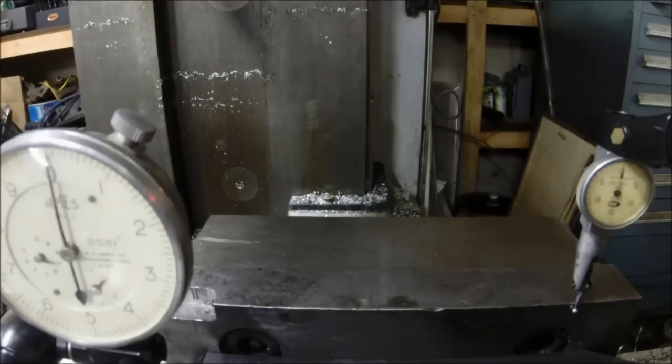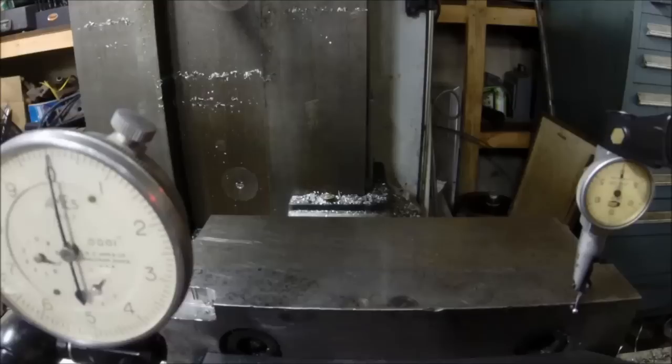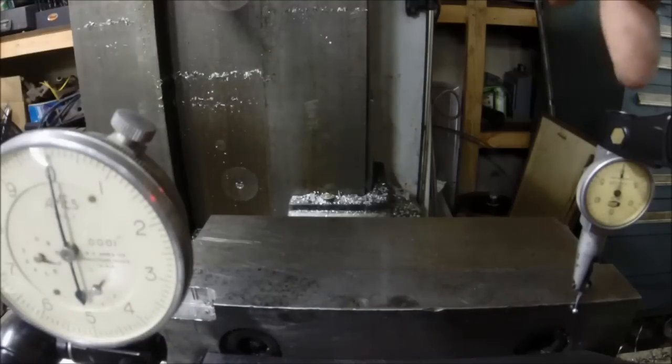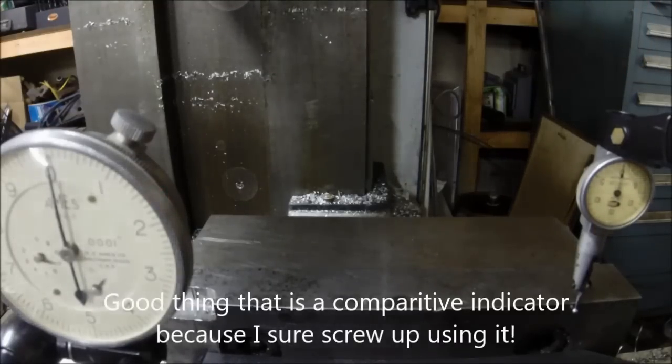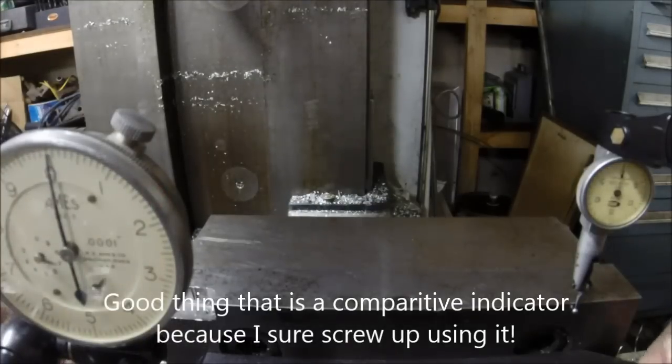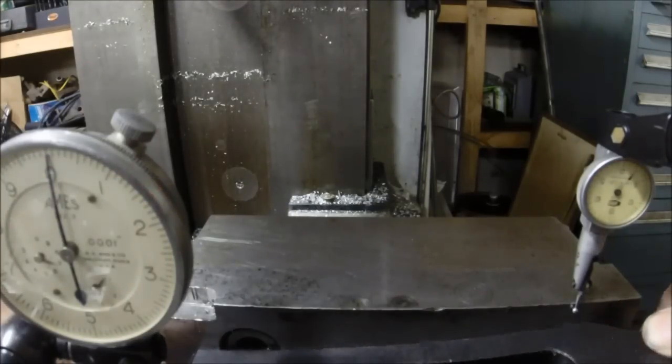All right, so hopefully you guys can see these all right. I've got my aims. This is a tenth indicator. This one over here reads in half thousandth increments. And to start off with, I've just got a mill toe clamp here in the bottom.